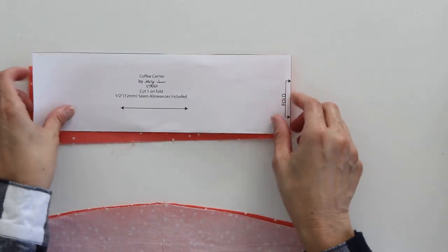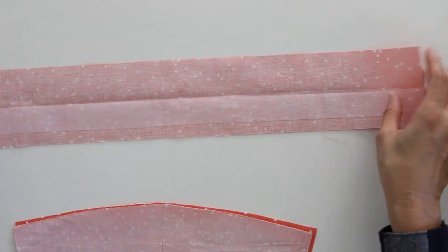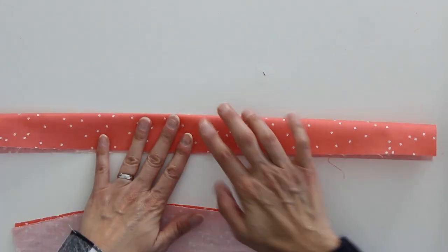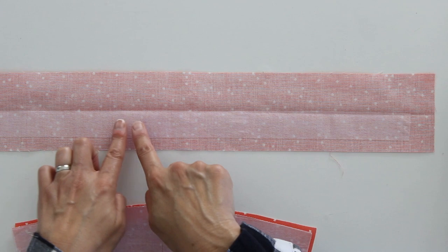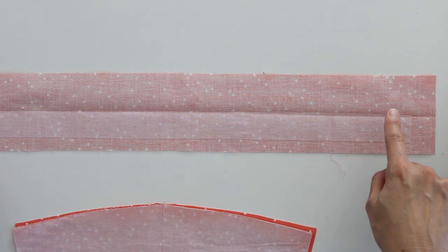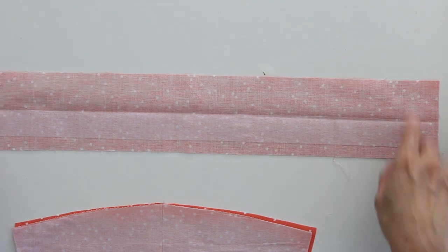And then the strap is also cut on the fold and what I've done here is I have folded it in half matching the long edges, pressed that line in, and then fused a one inch wide, 18 inch long piece of interfacing to the ends here.